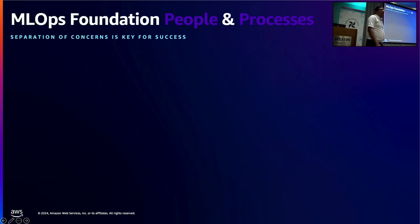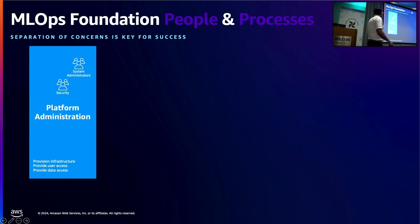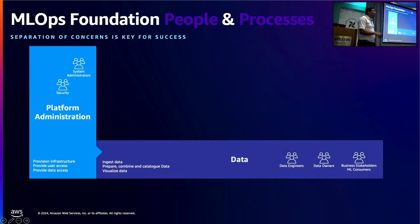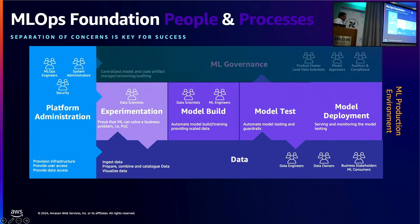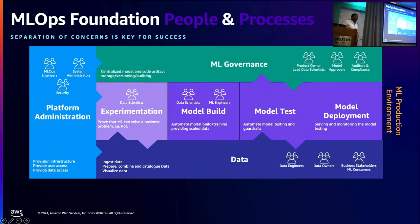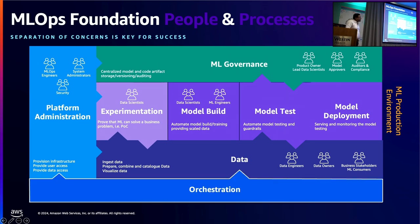If you ask me what the biggest features of doing this at scale are, we talk about four categories of people, process, and technology. We have to deal with platform administrators providing the infrastructure, data at scale, experimentation, model build, model test, and model deployment — that is the prime thing of MLOps. And finally you have to do this with ML governance, auditability, and traceability. This is where you need an orchestrator, and Apache Airflow perfectly fits the whole bill.